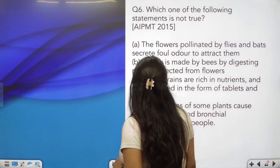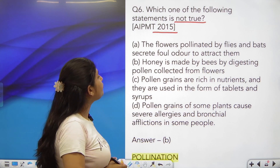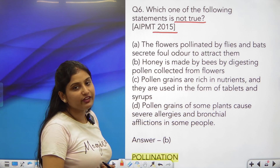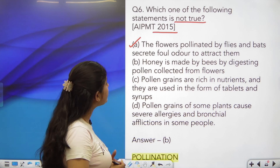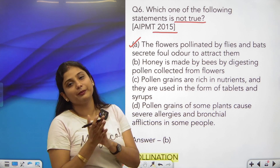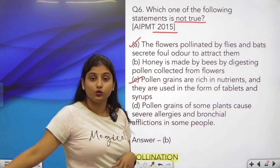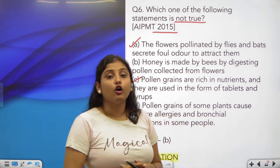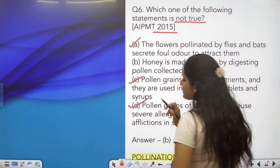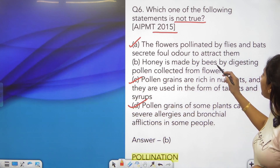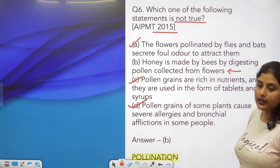Question number 6: which one of the following statements is not true? Asked in 2015. The flowers pollinated by flies and bats secrete foul odour — that is correct. Honey is made by bees by digesting pollen collected from flowers — this is not what we learned in this chapter. Pollen grains are rich in nutrients and used in the form of tablets — I showed this in the video; it is more common in foreign countries. Pollen grains of some plants cause severe allergies and bronchial afflictions — also written in the NCERT on pollen grains. So the answer is option B, which is not correct, because honey is not made by digesting pollen.